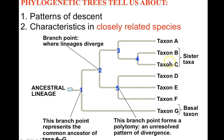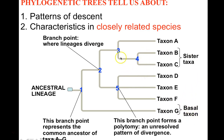Looking at this diagram, B and C are sister taxa. G is the basal taxon because G emerges very early from the common ancestor. So now you know what sister taxa, basal taxon, and polytomy mean.